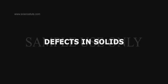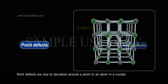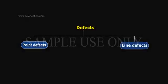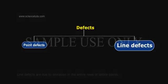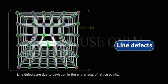Defects in Solids. Defects are mainly two types: point defects and line defects. Point defects are due to deviation around a point or an atom in a crystal. Line defects are due to deviation in the entire rows of lattice points.